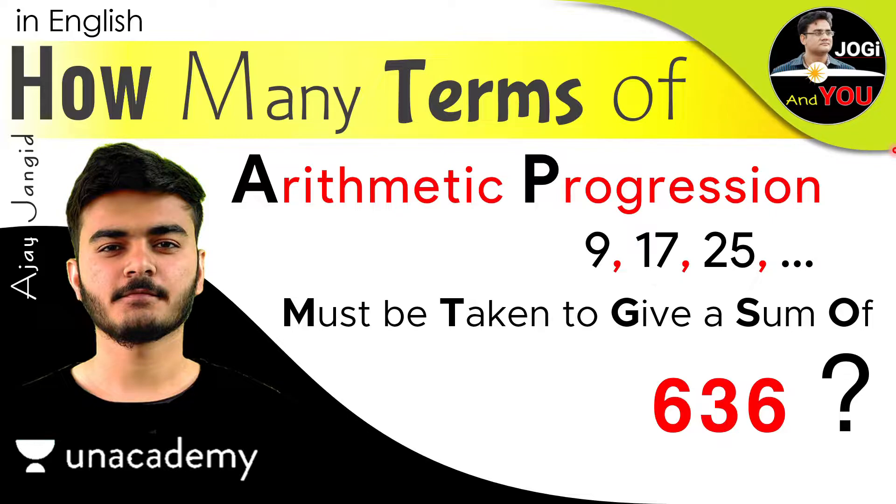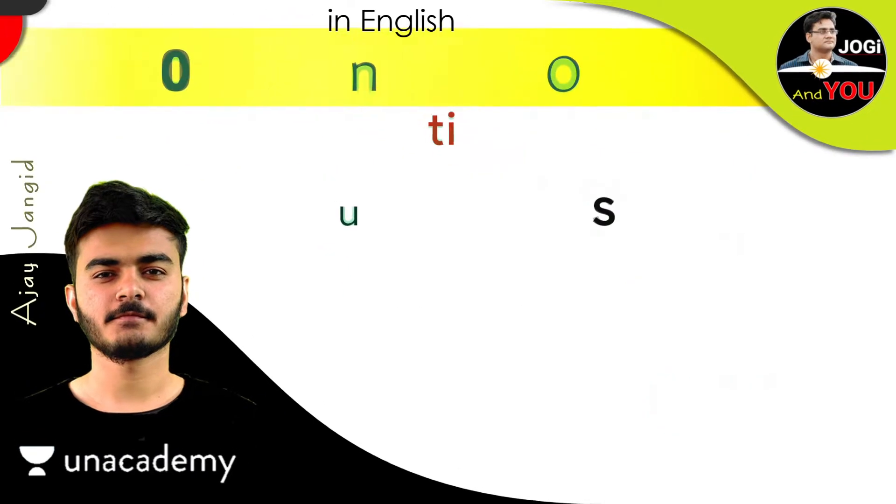It's asking how many terms we should sum to get 636 in total: the first term, second term, third term, and so on. So first of all, make some blank space here to solve this question.